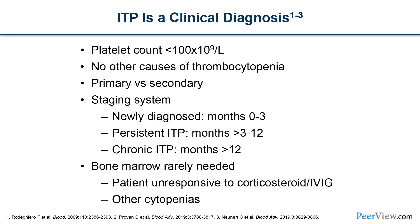The criteria for ITP is a platelet count under 100,000 with no other apparent cause of thrombocytopenia. We have primary disease, meaning there's no secondary lesion such as CLL, collagen vascular diseases, or other immune deficiencies. The staging system: newly diagnosed is the first three months, persistent ITP is months 3 to 12, and chronic ITP is after 12 months.